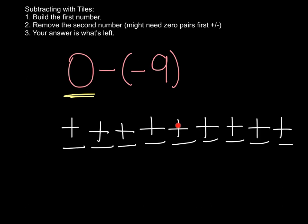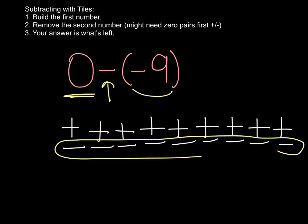I'm just going to double check. 1, 2, 3, 4, 5, 6, 7, 8, 9. All right, I've got 9 0 pairs here. So I started with 0, and I'm removing, that's what that says, 9 negatives. So now I pull all these away, and whatever's left is my answer. Count them up, and I have just 9, 9 positives. So 0 minus negative 9 is 9.